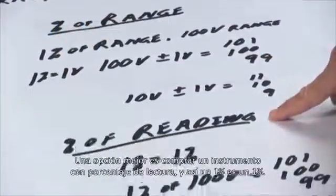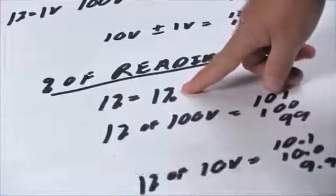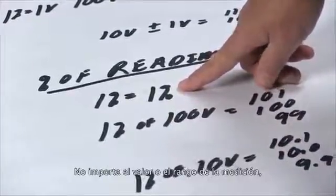A better way is to buy an instrument that has percent of reading, and then one percent is one percent. It doesn't matter what value or what range you're on.